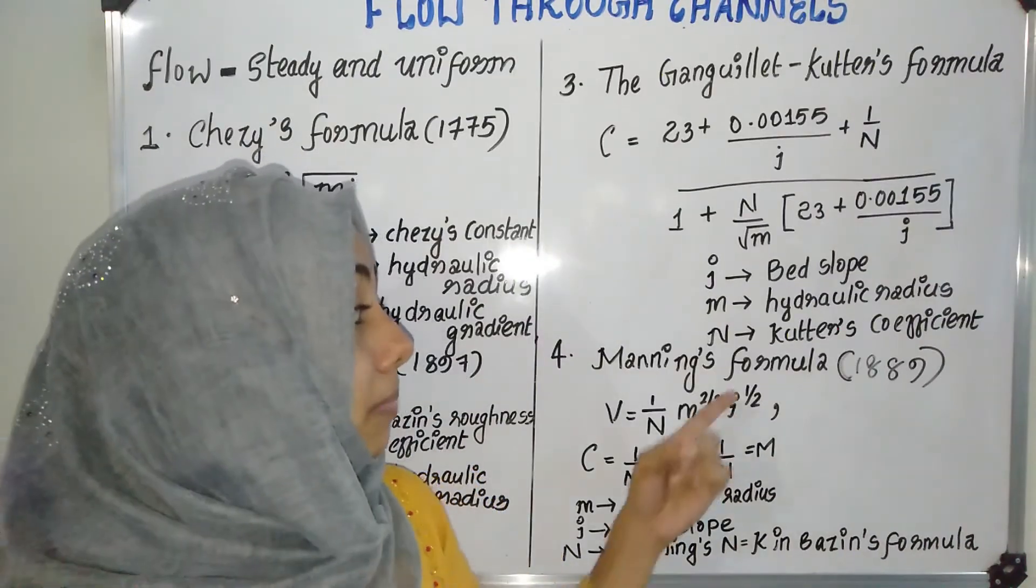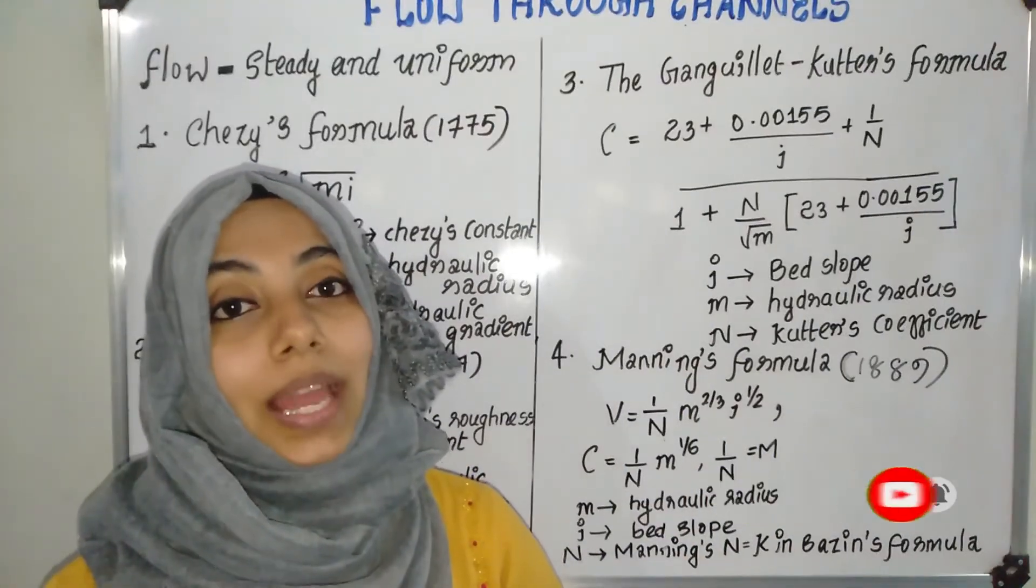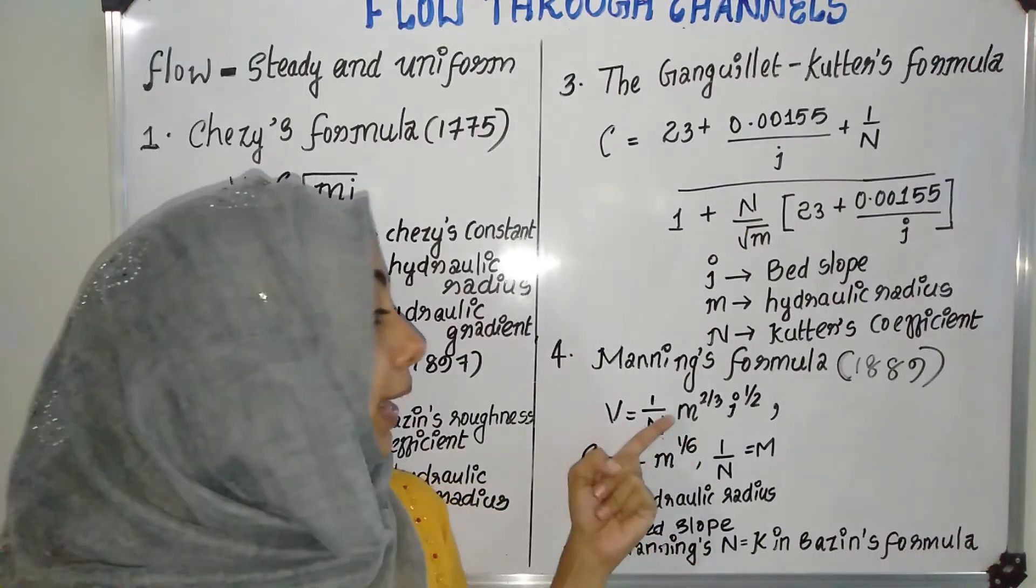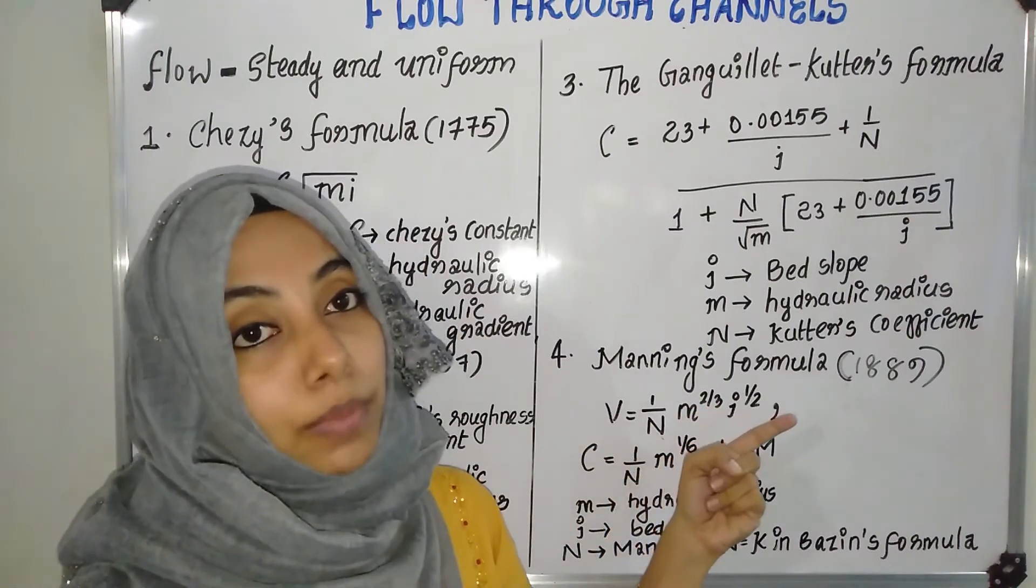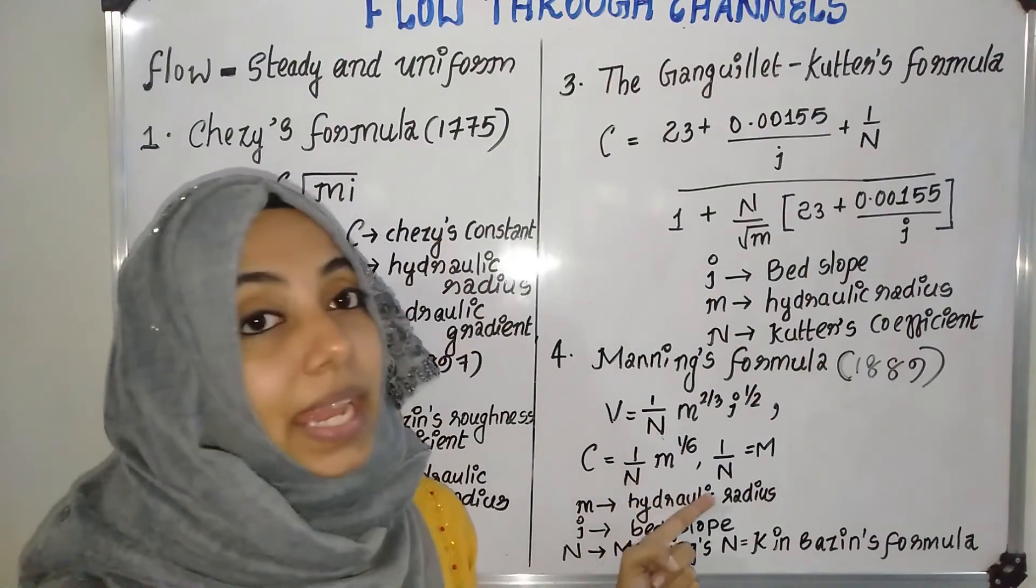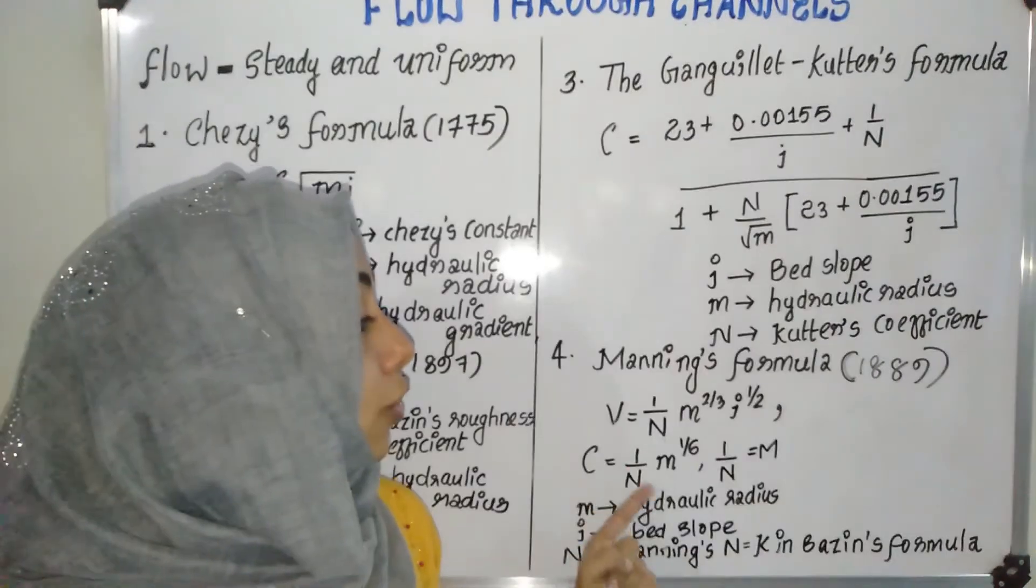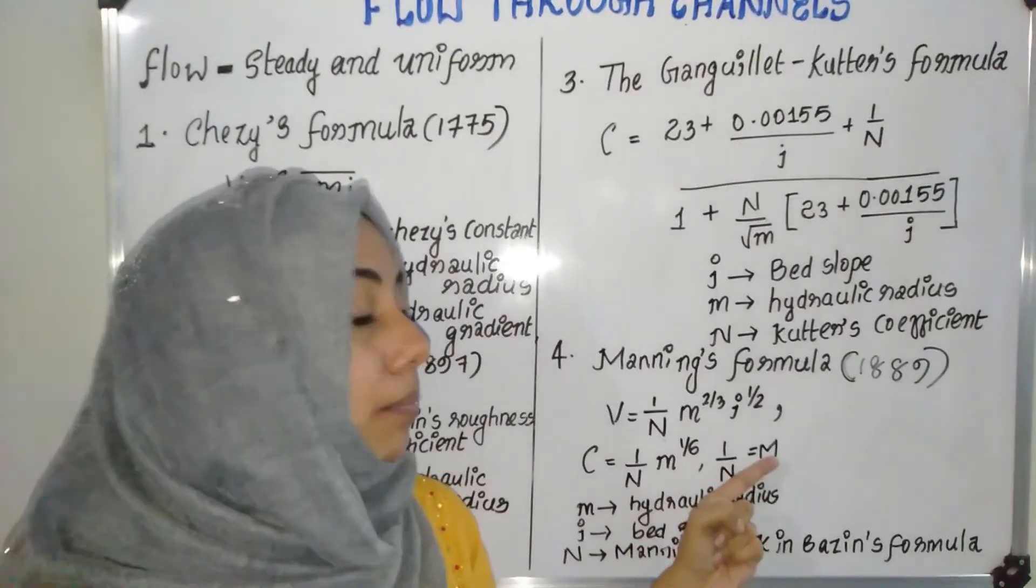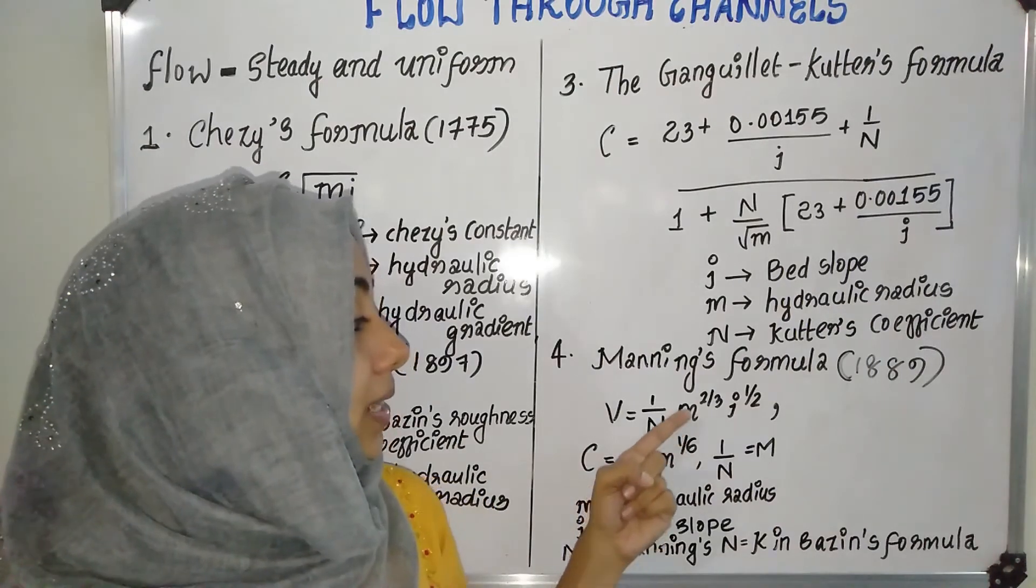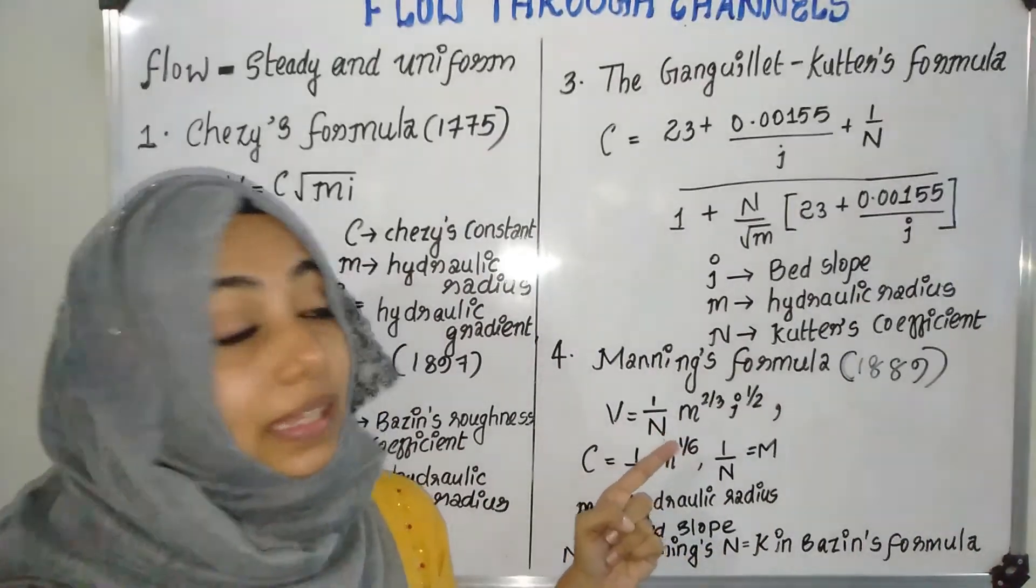The last formula is Manning's formula. In 1889, an Irish engineer derived Manning's formula. Manning's formula for velocity: V is equal to 1 by N, M raised to 2 by 3, I raised to 1 by 2. This expression is derived from C equal to 1 by N, M raised to 1 by 6.